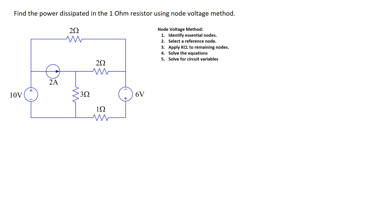The goal in this example is to find the power dissipated in this one ohm resistor in this circuit using the node voltage method. The five steps involved in applying the node voltage method are shown here, so let's see how we can systematically apply these steps to solve the circuit.